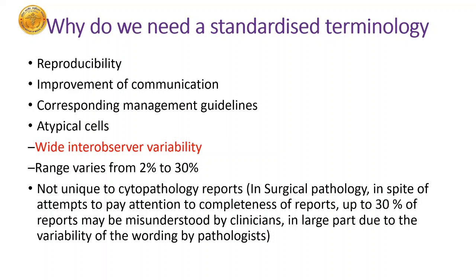Why do we need standardized terminology? We started with Bethesda for cervical cytology, then Bethesda for thyroid, and we keep updating them. Same for urine cytology — we need one language that somebody sitting elsewhere in the world can understand. This improves communication and reproducibility, and these categories have corresponding management guidelines. There is wide inter-observer variability, ranging from 2% to 30% or even more when talking about atypia — and this is not unique to cytopathology, it applies to histopathology reporting as well.